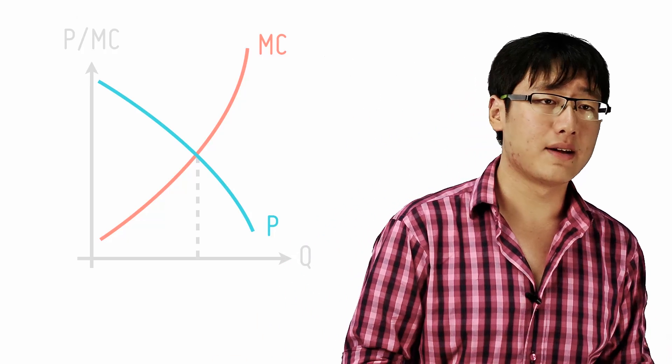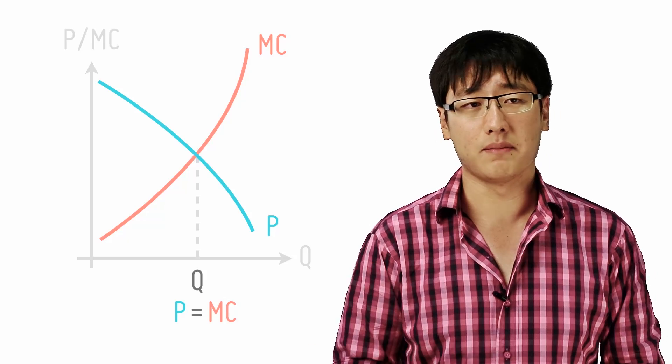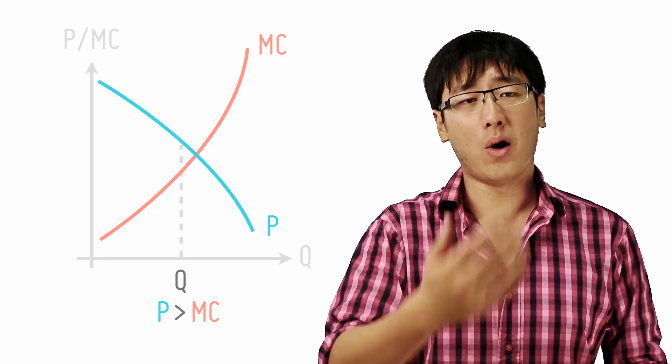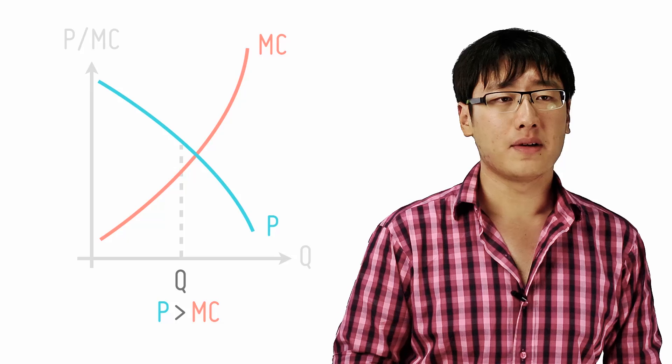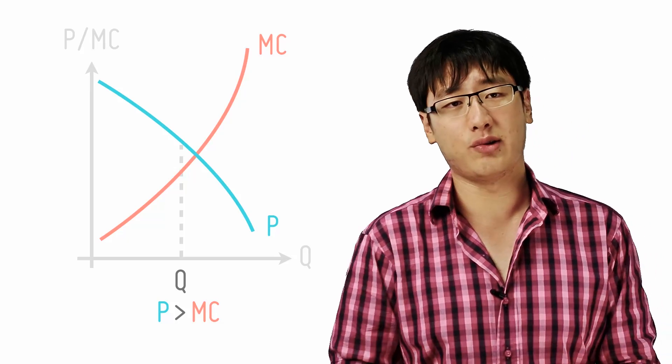Any amount less than that, P is higher than MC. So society values the last unit of good more than what it takes to produce it. So society can benefit if an additional unit is produced.